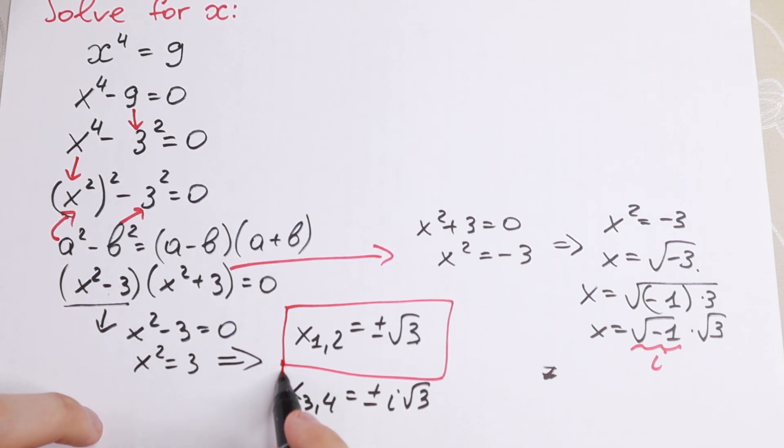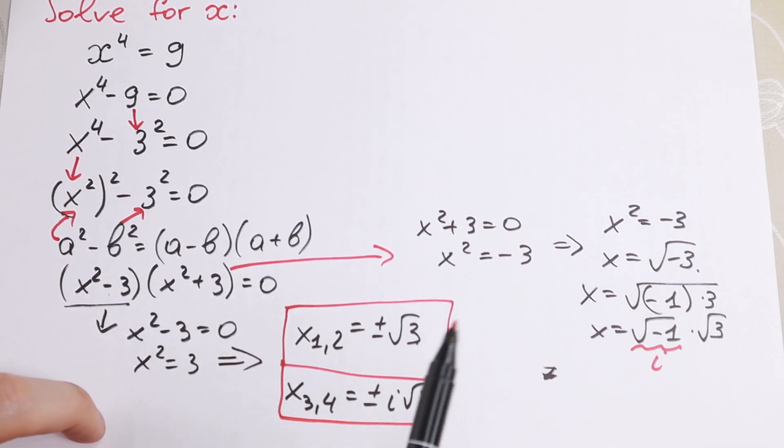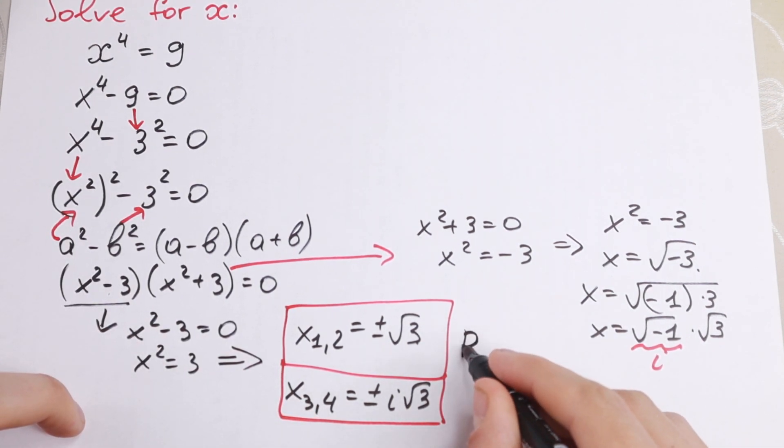This is our answer. And of course here plus minus in this step but I want to write it in this way. So right here we will have real number roots and right here we will have complex roots.